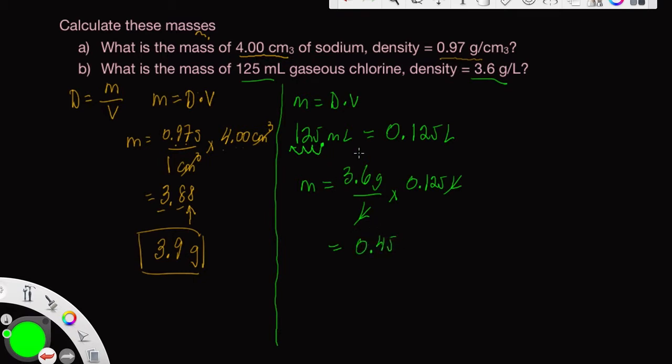So let's think about the rounding here. 3.6 has two sig figs. 0.125 has three sig figs. So we want to round the result off to two sig figs, which looks like we have already. So let's go ahead and write in the units there. We're left with grams after those liters cancel. So that's the mass of chlorine, which is a gas. Thanks for watching.